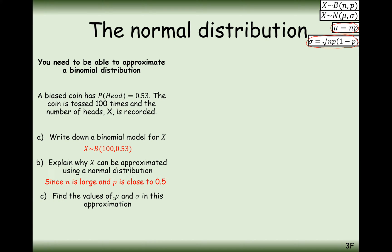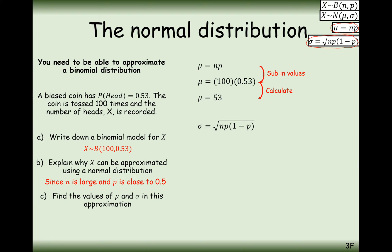Part (c): find the value of μ and σ for this approximation. The mean equals n times p, which gives 53. The standard deviation is the square root of n times p times (1 minus p), so that's the square root of 100 times 0.53 times 0.47, which equals 4.99. Questions could then follow — for example, finding the probability of scoring fewer than 40 heads, which you'd work out using this normal distribution.